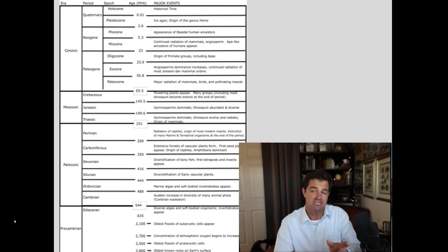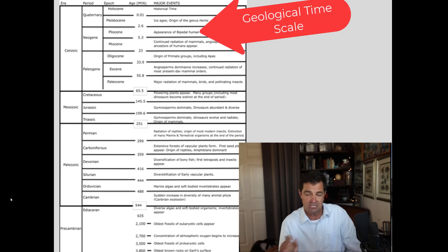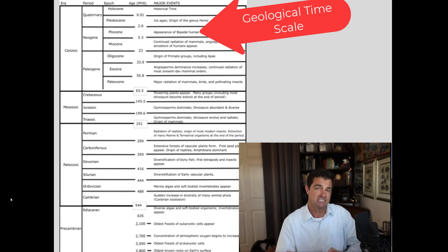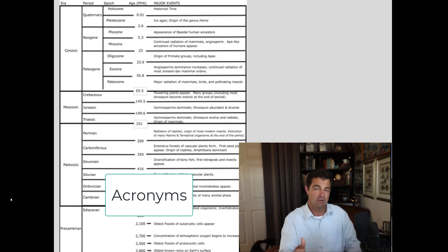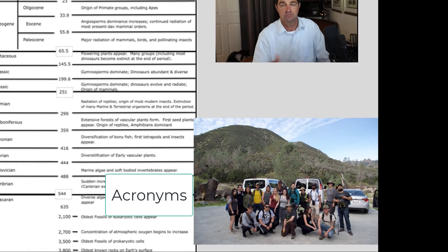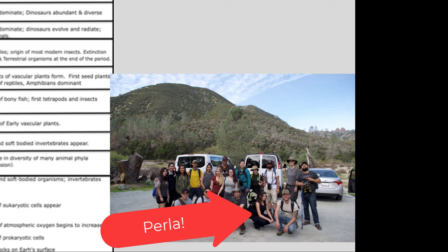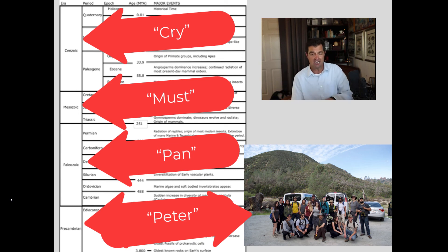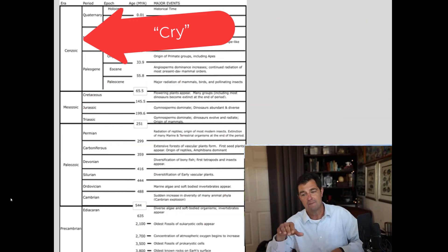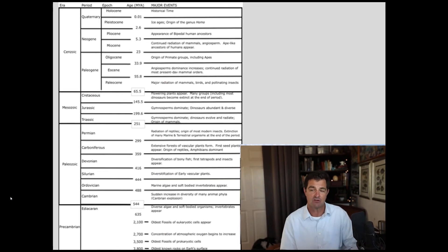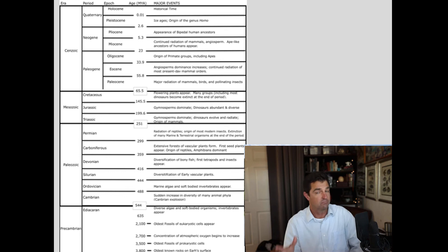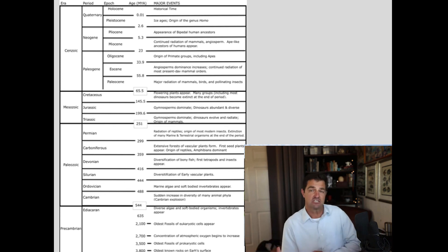Bio 2 is a very time-consuming course with a ton of stuff to memorize. One thing you can start on right now is memorizing the geological timescale that you see here. Although it looks overwhelming, there are simple ways to memorize it — like coming up with acronyms. For example, one of my former students, Perla Hachi, who's now a PhD student, came up with the acronym 'Peter Pan Must Cry' to remember Precambrian, Paleozoic, Mesozoic, and Cenozoic. Having the geological timescale learned before we even start puts you in a really good starting spot as we move into the semester.